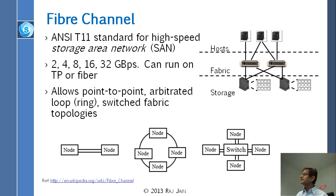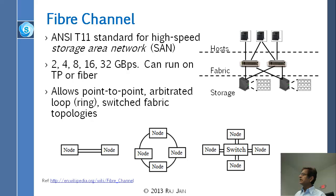With this arrangement, any host can reach any disk in spite of all the failures. Fiber Channel runs at 2, 4, 8, 16, 32 gigabits. It can run on copper or fiber. It allows point-to-point, arbitrated loop, and switched fabrics.